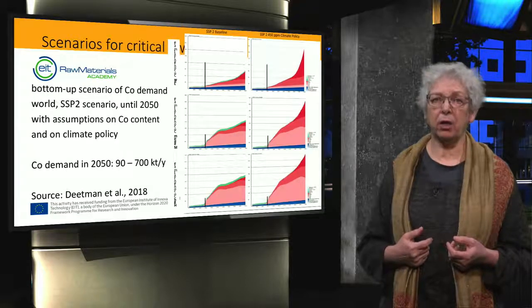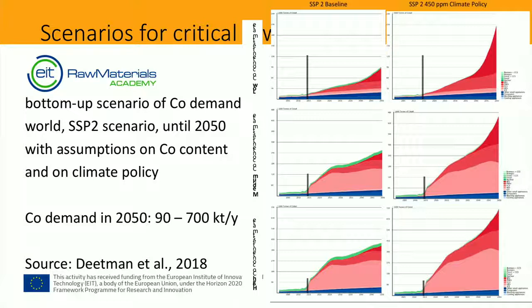Demand forecasts usually assume the material content of the products will remain as it is. In the absence of other information, I would do it like that as well. This slide shows a forecast of cobalt demand related to electronics, vehicles, and energy technologies at a global level. In this forecast, the material content is also assumed not to change over time. But we can be sure that when supply problems occur, technology developers will look for alternatives.